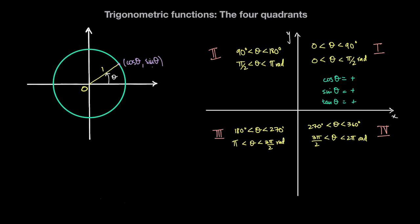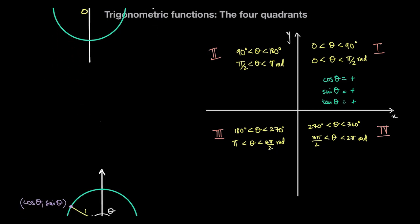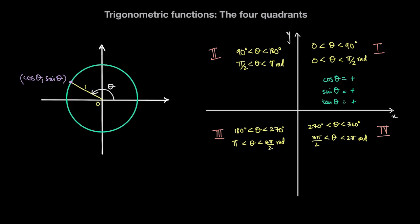Now if theta is between 90 degrees and 180 degrees — or between pi over 2 and pi radians — the x-coordinate of the point on the unit circle is negative since the point is to the left of the y-axis, but the y-coordinate is still positive. So cosine of theta in the second quadrant is negative, sine of theta is positive, and tan of theta — which is sine divided by cosine — a positive divided by a negative — is also negative.